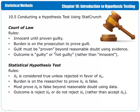In a court of law, guilt must be proven beyond reasonable doubt using evidence. In statistical hypothesis testing, the researcher must prove H0 is false beyond reasonable doubt using data. The outcome of a trial in a court of law is guilty or not guilty — innocent is not one of the outcomes. In statistical hypothesis testing, the outcome is reject H0 or do not reject H0. Accepting H0 is not one of the possible outcomes.